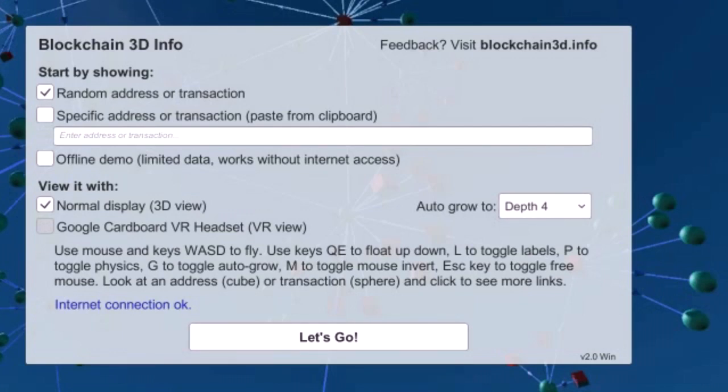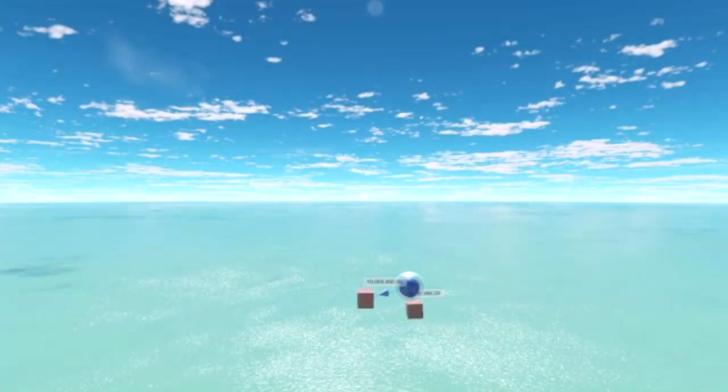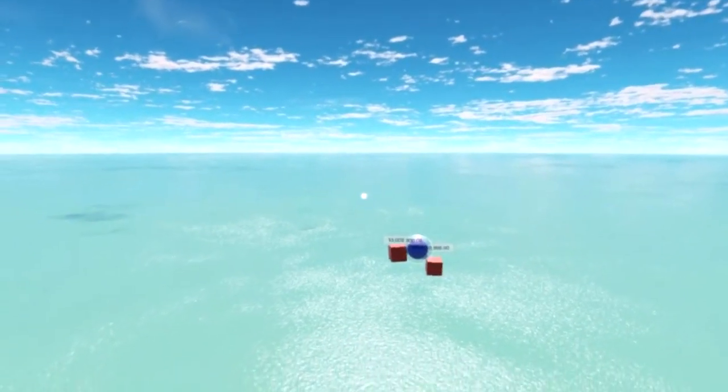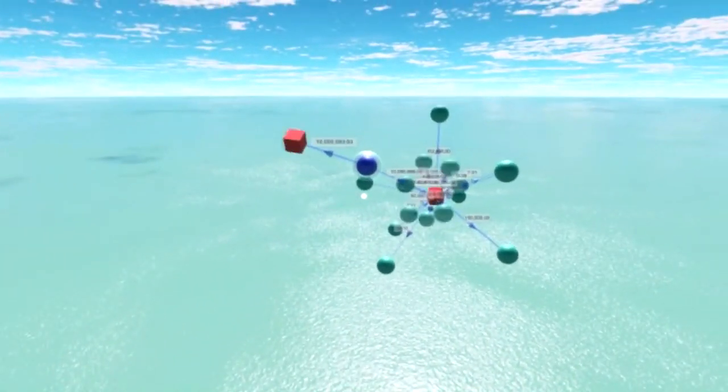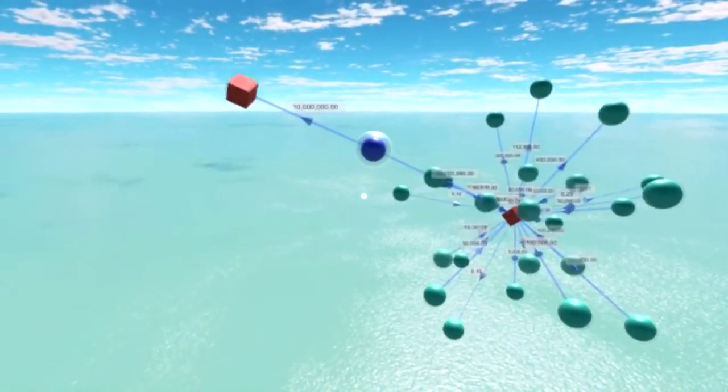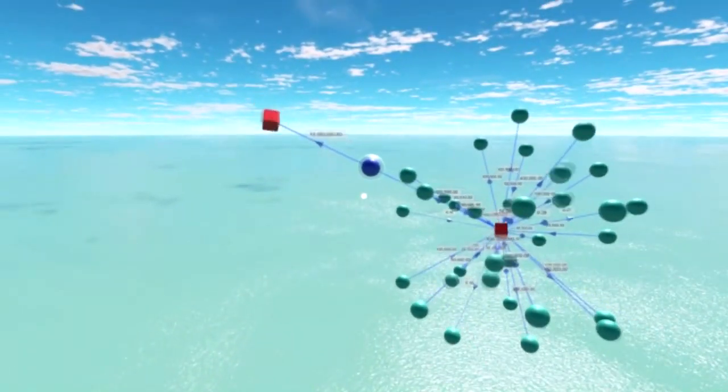Now we can press the go button and the application displays our graph. As you can see, the graph is growing. The application is growing the graph initially just by itself. We don't have to press anything.